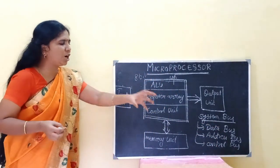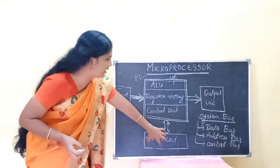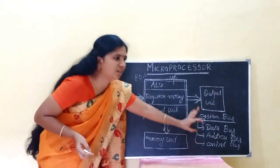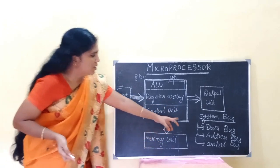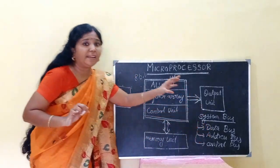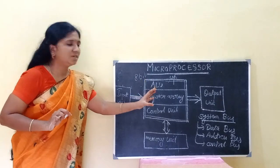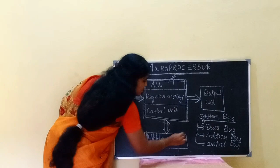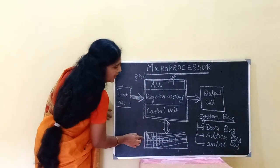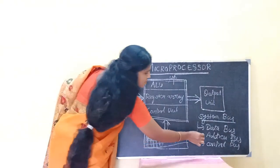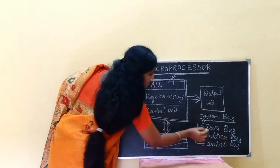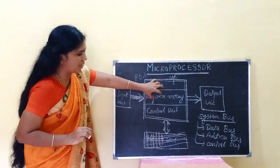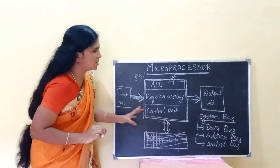Data Bus transfers data. Address Bus transfers memory program addresses. Control Bus transfers control signals — read and write operations. The Address Bus identifies the memory location. The Control Bus carries control signals for read and write — these are the basics.